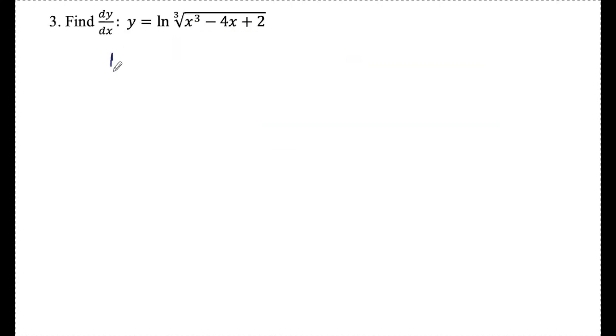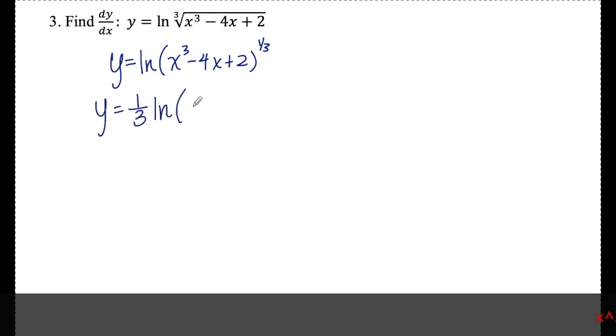Number three: I need to rewrite y first. Since I have a cube root, I need to rewrite it as a fractional exponent. So y = ln[(x³ - 4x + 2)^(1/3)]. Now I can move that exponent to the front: y = (1/3)ln(x² - 4x + 2).